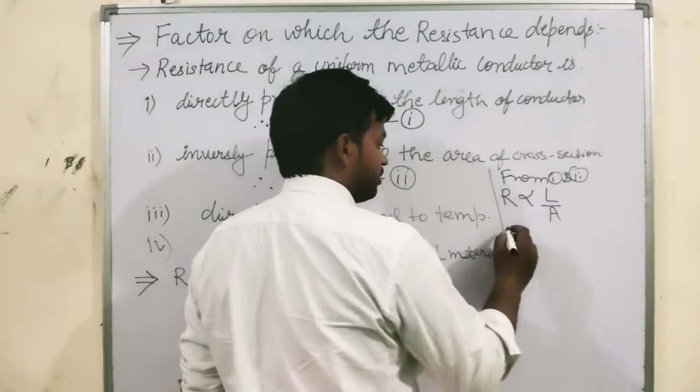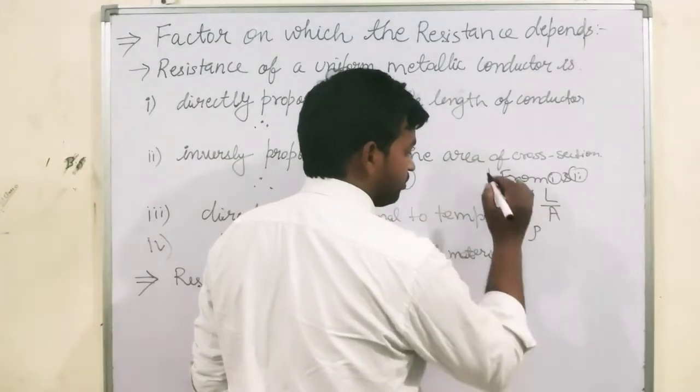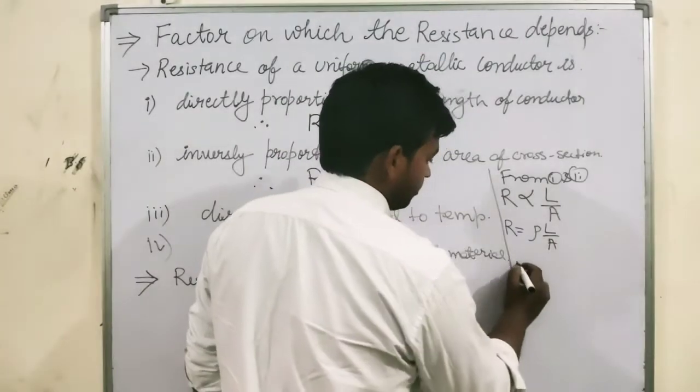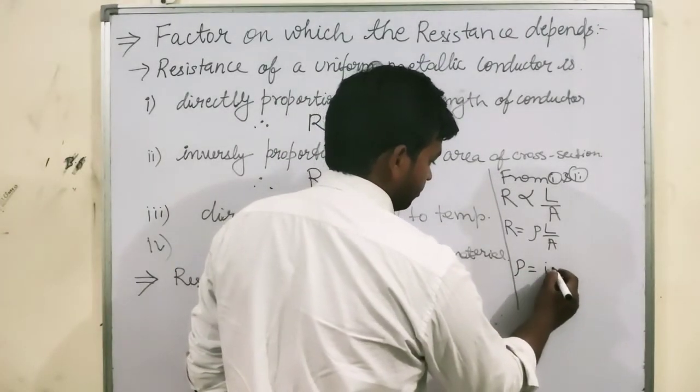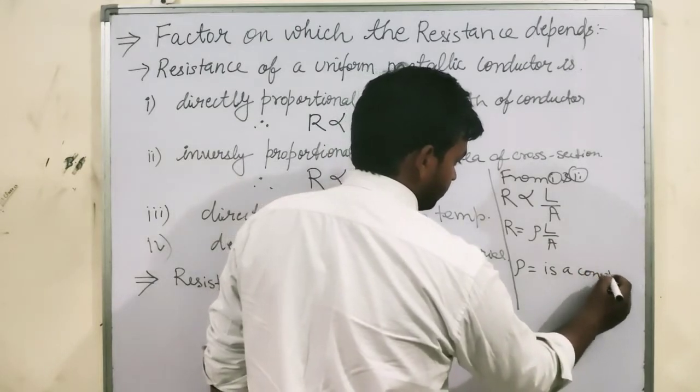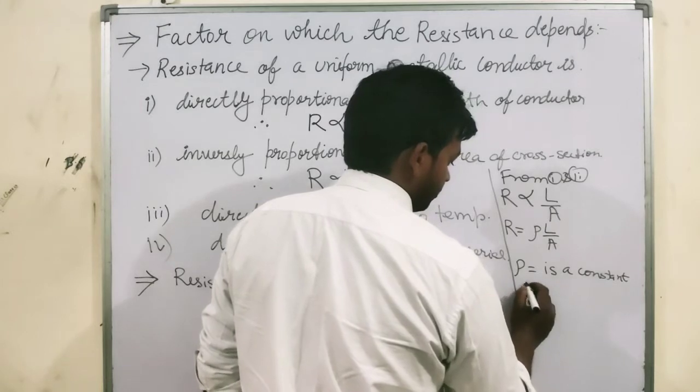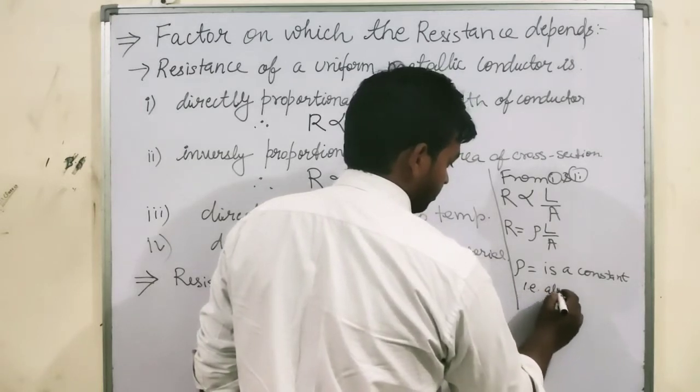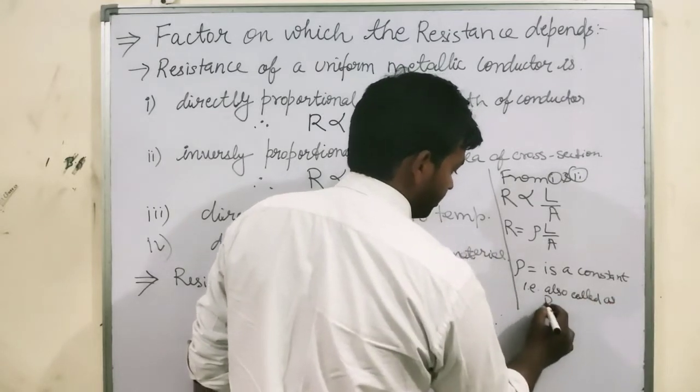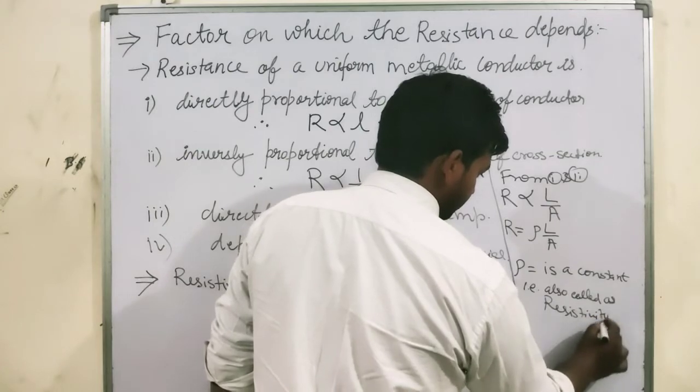To remove this proportionality, we write a constant, that is rho L by A. And this constant is also called resistivity, clear?